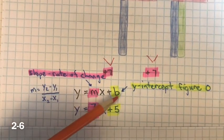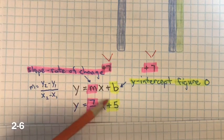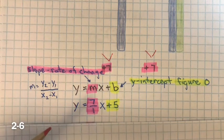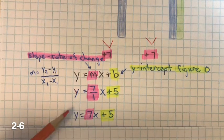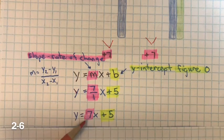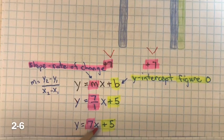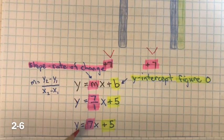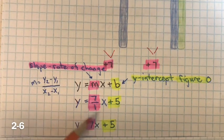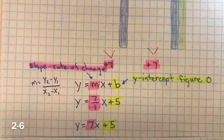We have the y-intercept, or figure 0 — this is what you start with. Figure 0, we started with 5 tiles. So the equation would be y equals 7x plus 5. Once you come up with the equation, always go back and check. For figure 0, if x is 0, we should have 5 tiles: 7 times 0 plus 5 is 5 — that works. Make sure you try it with several figure numbers, or if you were given a table, plug in those values to verify.